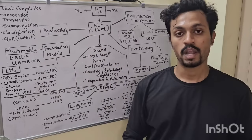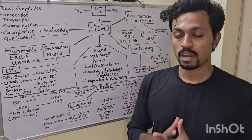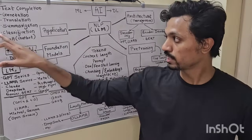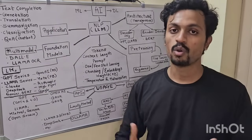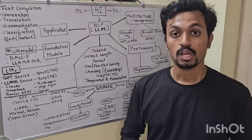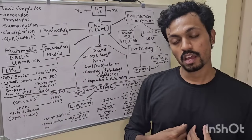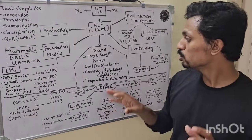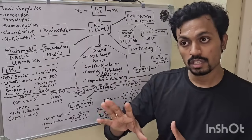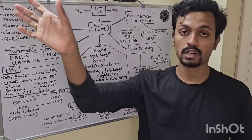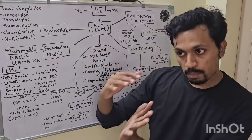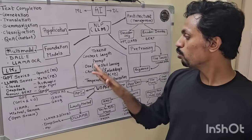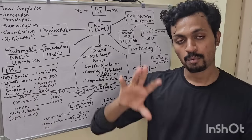Then comes the prompt. When you use a model, you ask it a question. For example, if you chose a classification model but ask a Q&A question, you should structure your query correctly. What you do is use a prompt template — a structured format for asking questions — so the model gives the right answer. This is called a prompt template.